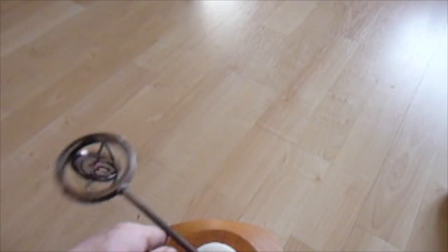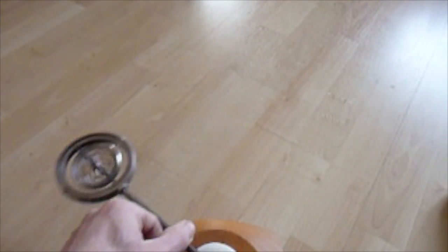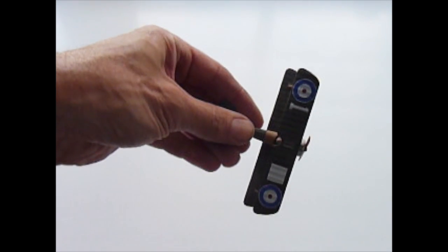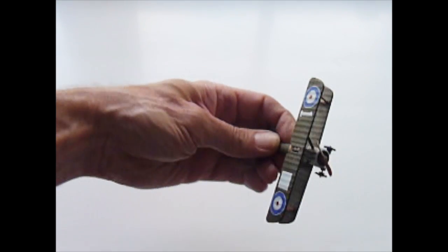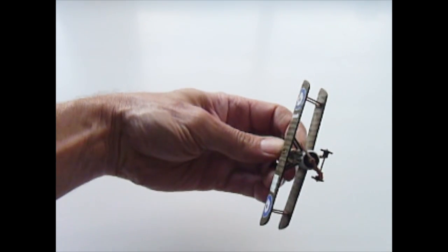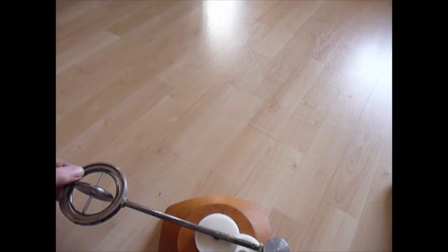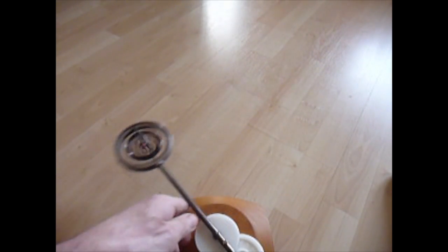For the propeller and engine to follow the line of this arc, they need to turn through 90 degrees. This creates a tendency for the plane to either climb or dive. Replace the propeller with a gyroscope and this effect is easier to see.